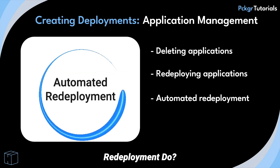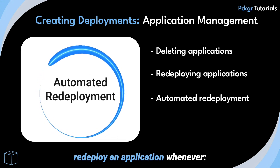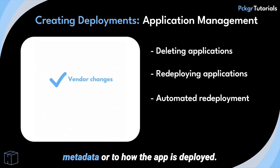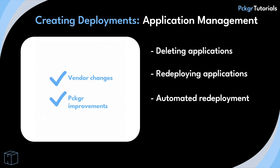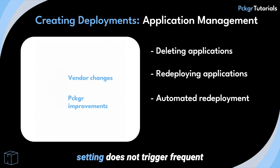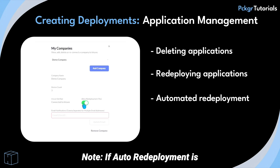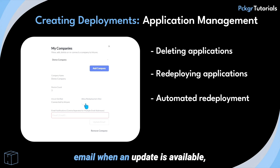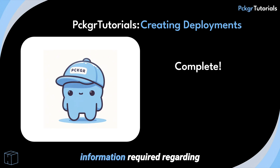When automated redeployment is enabled, Packager will automatically redeploy an application whenever a vendor makes changes to the metadata or to how the app is deployed, or when Packager makes improvements to the deployment scripts. The automated redeployment setting does not trigger frequent updates like Auto Update — it only applies when a structural change occurs in the deployment package. If Auto Redeployment is disabled, Packager will notify you via email when an update is available, allowing manual redeployment. This tutorial has covered all the information required regarding application deployment. If you have any further questions, please read our online documentation or contact support.